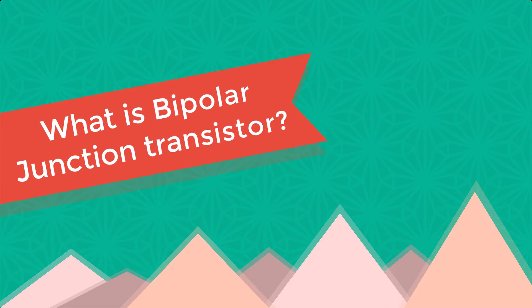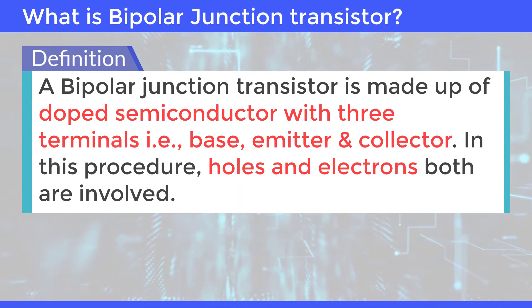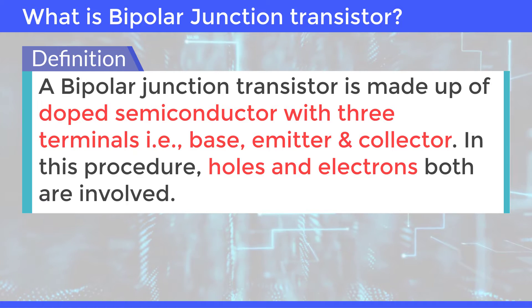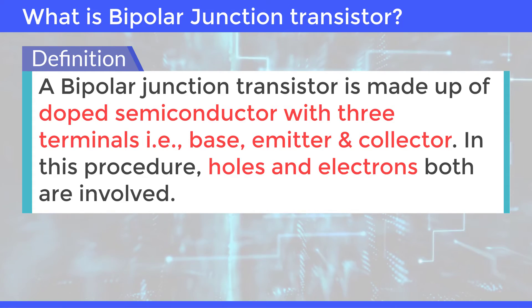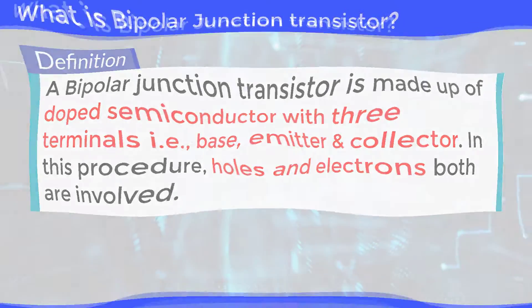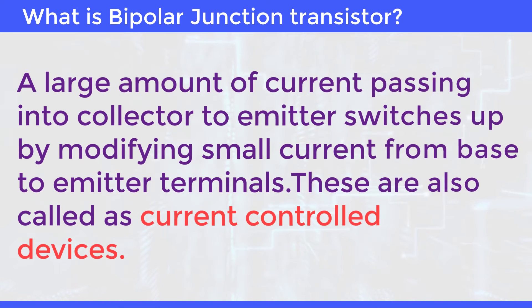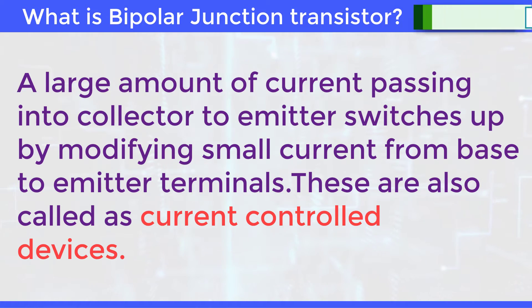A Bipolar Junction Transistor is made up of doped semiconductor with three terminals: base, emitter, and collector. In this device, holes and electrons both are involved. A large amount of current passing from collector to emitter is switched by modifying a small current from base to emitter terminals. These are also called current control devices.